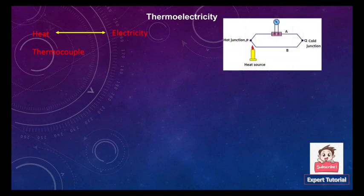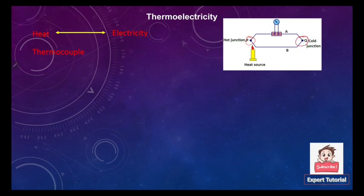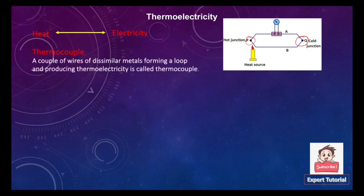Looking at this schematic diagram, this is a thermocouple. As you can see, it consists of two dissimilar metals joined together to form a thermocouple, creating two junctions — a hot junction and a cold junction. The formal definition: a couple of wires of dissimilar metals forming a loop and producing thermoelectricity is known as a thermocouple.